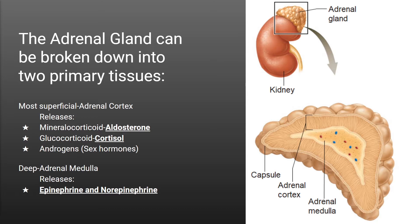The adrenal cortex releases aldosterone for water retention, cortisol for stress response, and androgens to synthesize sex hormones like testosterone and the active form of estrogen referred to as estradiol. We are going to discuss each of these hormones' effects in detail, so let's begin with the cortex.